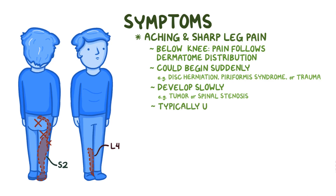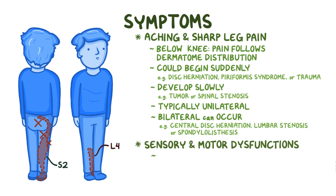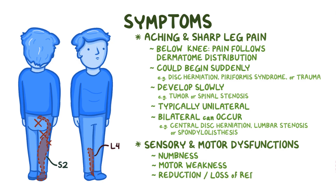Sciatic pain is typically unilateral, meaning it's only located on one side. Bilateral sciatica, where both legs are affected, can occur with central disc herniation, lumbar stenosis, or spondylolisthesis. Sometimes the pain can be accompanied by other sensory or motor dysfunctions like numbness, motor weakness, and reduction or loss of reflexes.